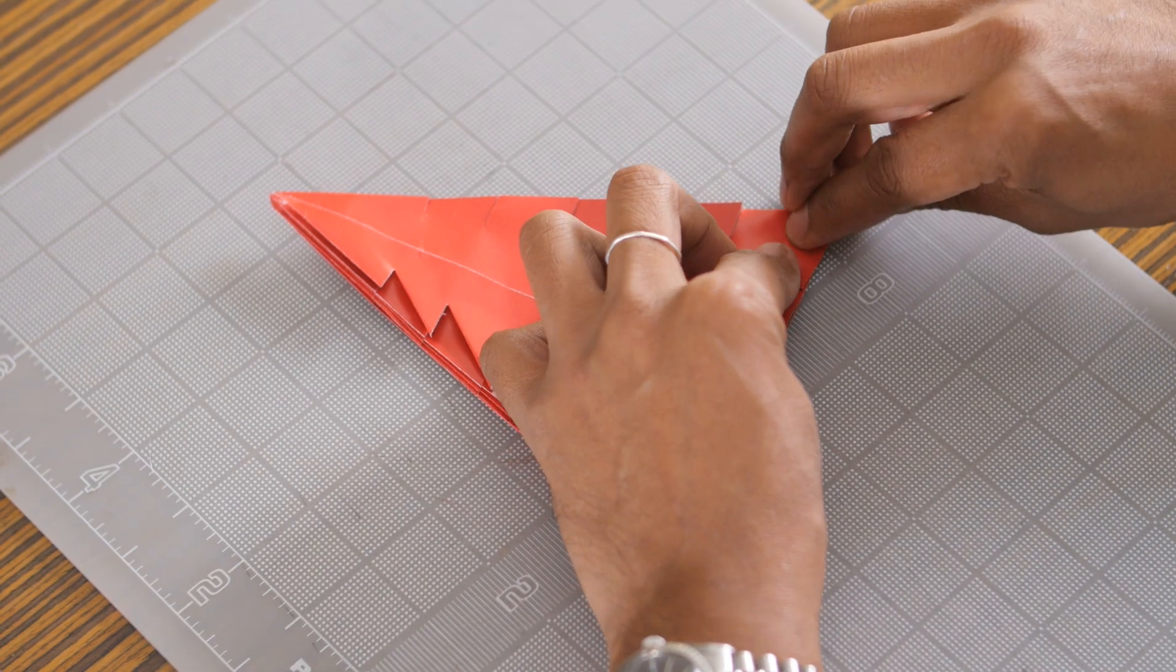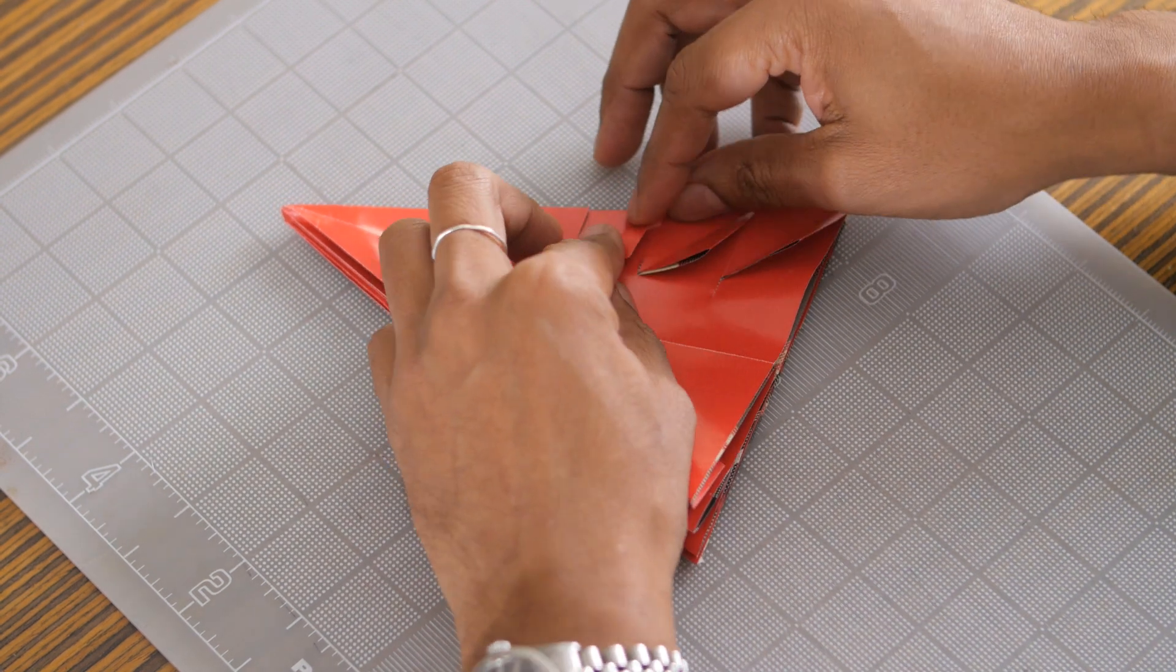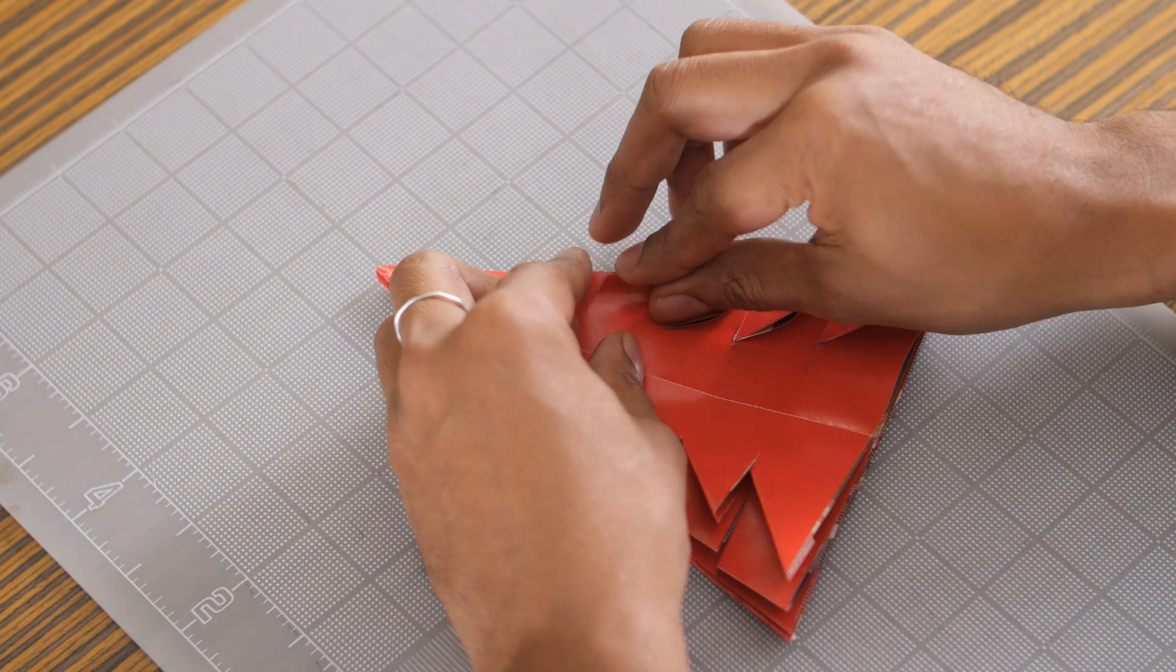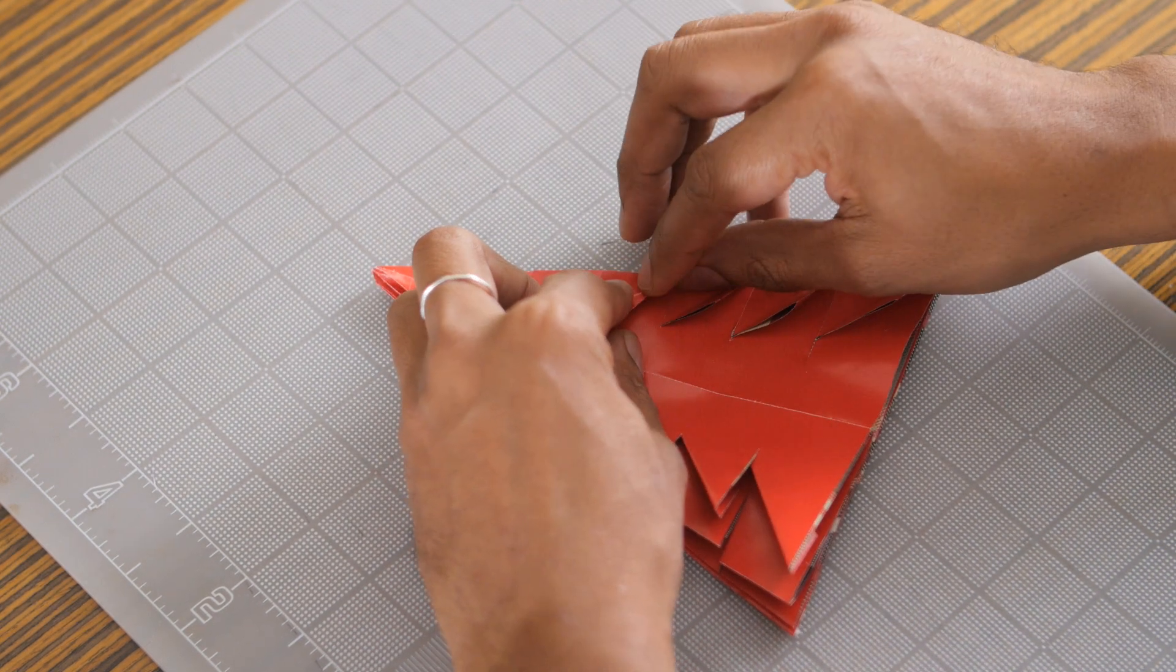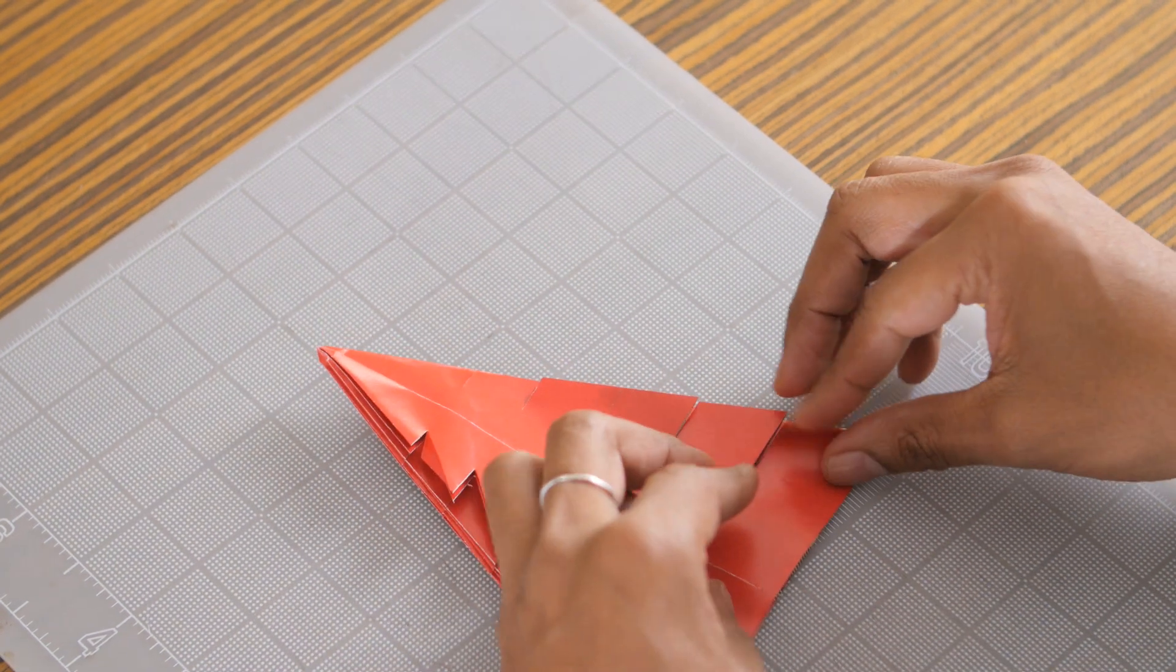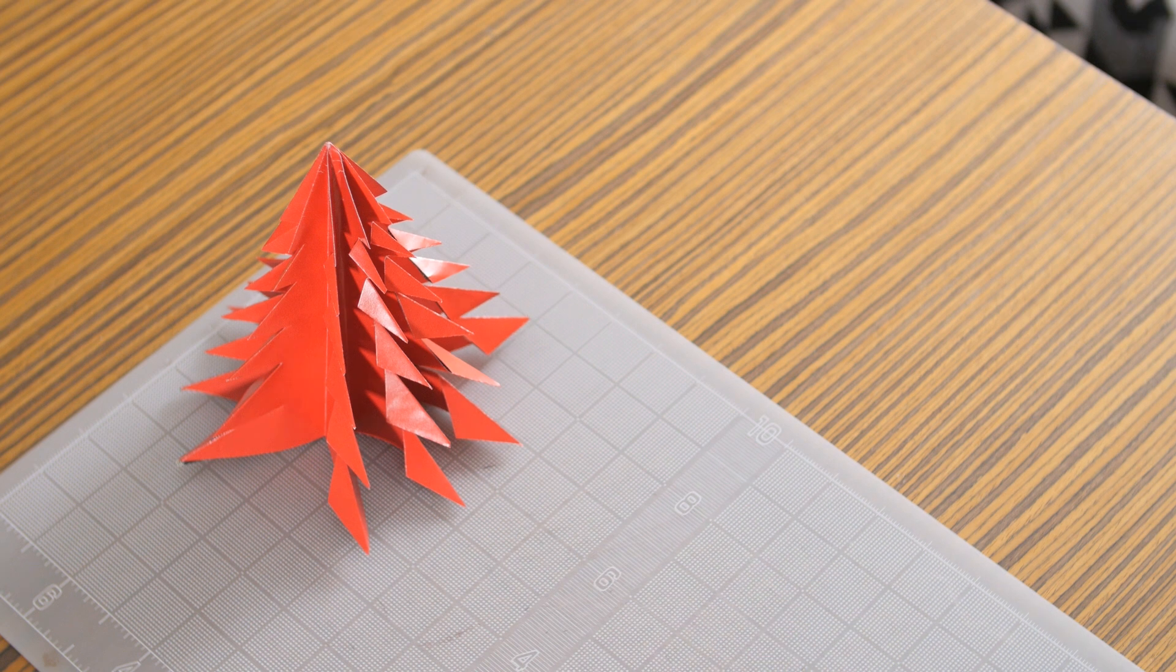Now comes the fun part. We're going to fold along our cuts just like this. Fold down to make little triangles. Start at the base and work your way up to the top like that. Flip it over and continue folding all the way around on all eight sides. And when you're done just set the tree up and it should look like this.